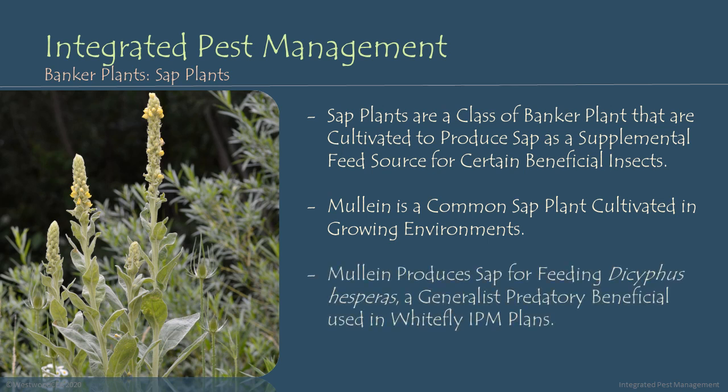Mullein plants produce a sap that's good for feeding and maintaining populations of Dicephus hesperus, a generalist predatory insect used in managing whitefly populations in integrated pest management plans.